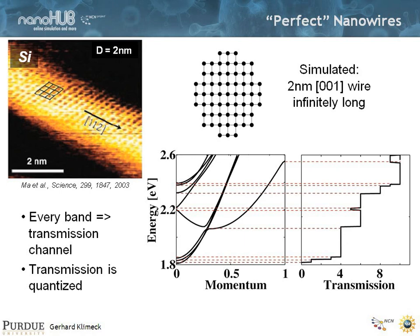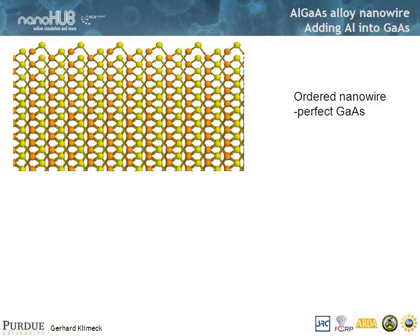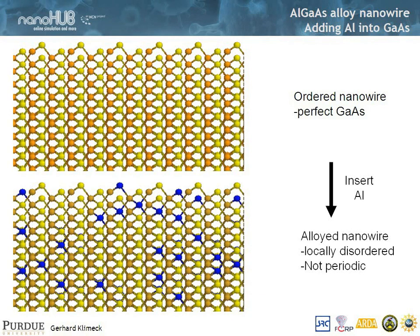So now the question comes: what happens if I make my structure a little bit disordered? Let's start with a perfectly ordered gallium arsenide and say we insert aluminum. That would happen at random — we pick some sites, and that would be locally disordered and not periodic.